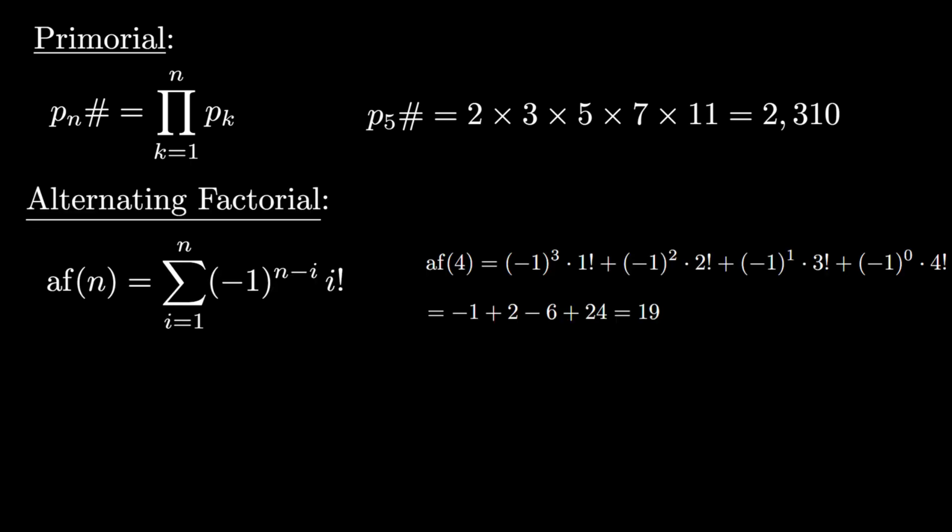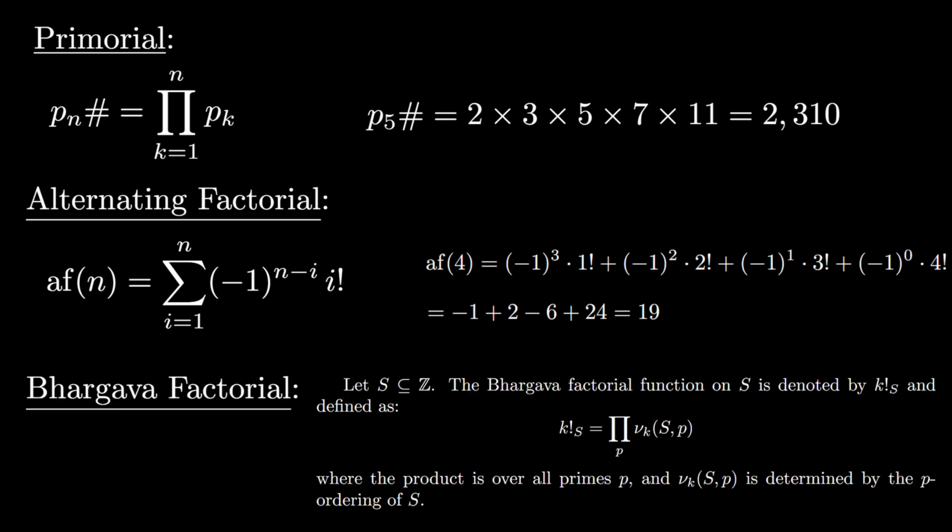The primordial of the nth prime number is the product of the first n prime numbers. The alternating factorial is the absolute value of the alternating sum of the first n factorials of positive integers. The Bhargava factorial essentially tells us how to generalize the factorial function to any subset of the integers.